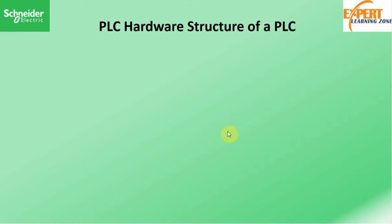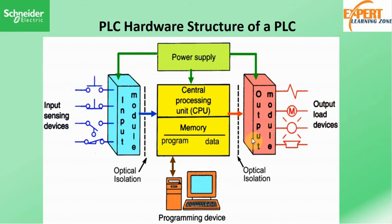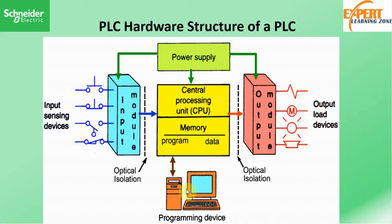Now let's look at the components that make up the hardware. The PLC hardware is made up of different components. We have the input module, which gathers information from the external world and channels it to the CPU. The central processing unit processes that information and sends it back to the outside world through the output module. For the output we may have things like valves and LEDs, while for the input you can have things like sensors or switches. All of these function with the help of a power supply, and we also have a workstation — the programming device — where the software component resides.